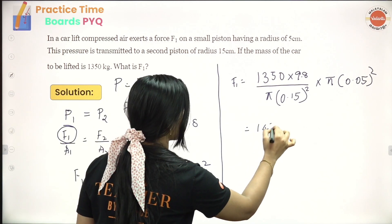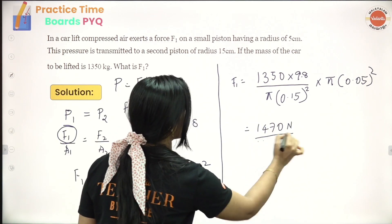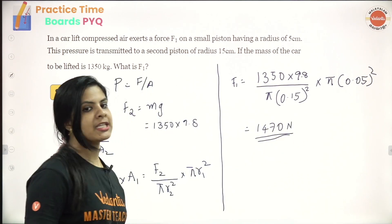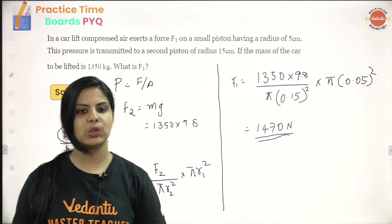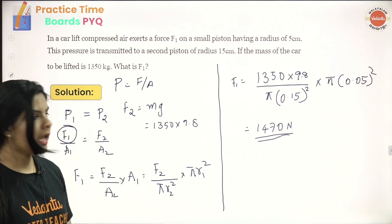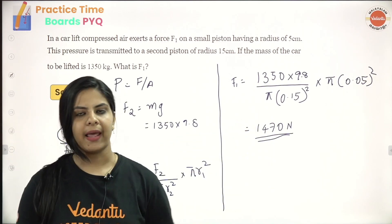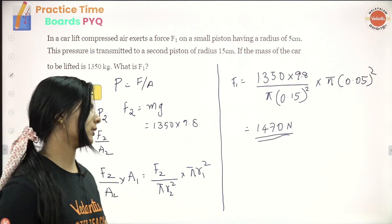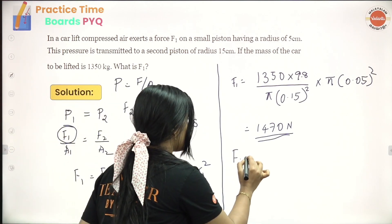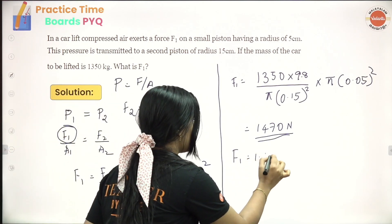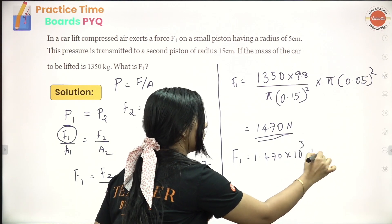The answer is 1,470 Newton. So F1 is 1,470 Newton, which is 1.470 into 10 to the power 3 Newton.